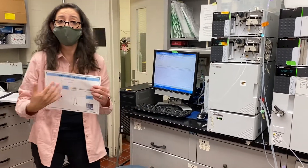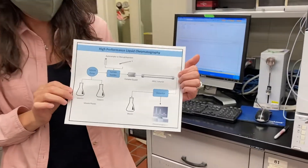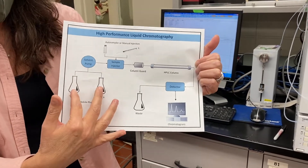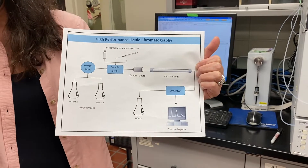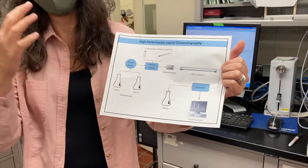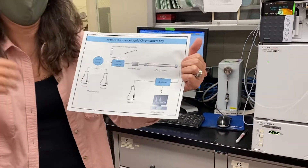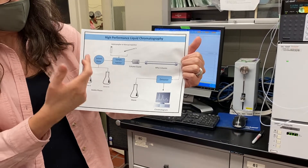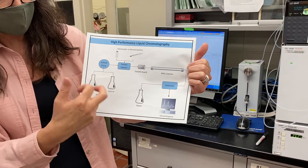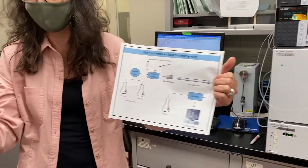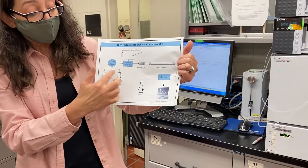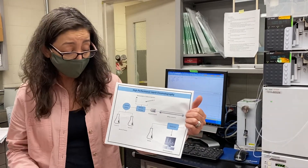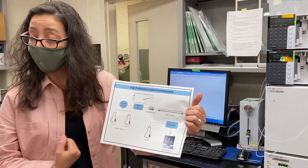First I want to walk you through the different parts of the HPLC. Like we talk in lecture, we have the mobile phases and a pump — sometimes you have one pump, sometimes you have two pumps. We can have two, three, or four solvents. When we want to run a gradient elution like today, that means we're going to change the concentration of the mobile phase over time, so we're going to need more than one solvent.